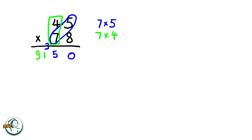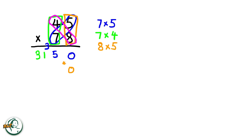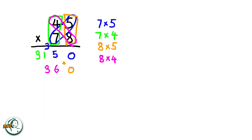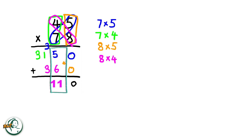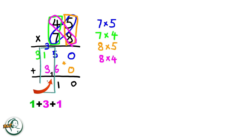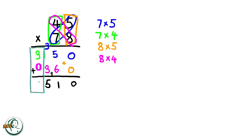Moving on to the other number, 8 multiplied by 5 equals 40. We write down the 0 and carry over the 4. And 8 multiplied by 4 is 32. Adding the carried over 4 to 32, we get 36. Now, we add these two sets of products. Adding 0 and 0 gives us 0. 5 plus 6 is 11. We write down 1 and carry over the 1. And 1 plus 3 plus the carried over 1 is 5. 3 plus 0 is 3. Therefore, the product of 45 and 78 is 3510.